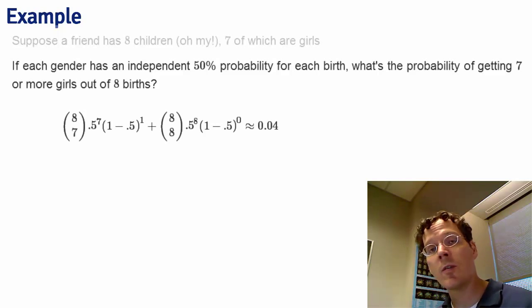That's the probability of 7, which is 8 choose 7, 0.5 to the 7, 1 minus 0.5 to the 1, plus 8 choose 8, 0.5 to the 8, 1 minus 0.5 to the 0, which works out to be about a 4% chance.